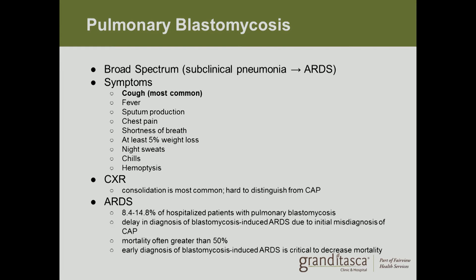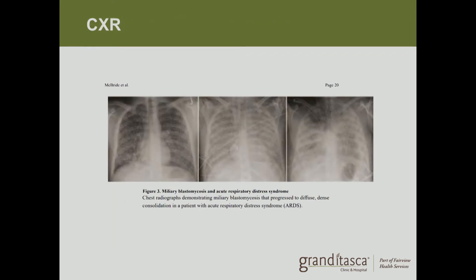In ARDS — Acute Respiratory Distress Syndrome — about 8 to 15 percent of hospitalized patients with pulmonary blastomycosis will progress to ARDS. This often happens due to a delay in diagnosis caused by misdiagnosis as community-acquired pneumonia, and mortality can be as great as 50 percent. Early diagnosis of blastomycosis-induced ARDS is critical to reducing mortality. On chest x-ray, you can see the progression from relatively clear to increasingly hazy, making it difficult for the patient to breathe.